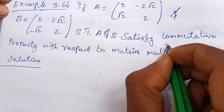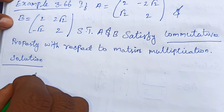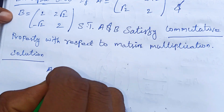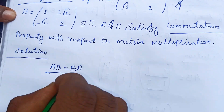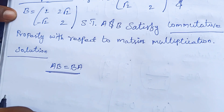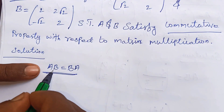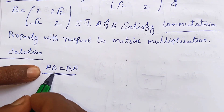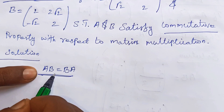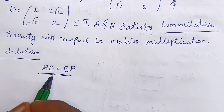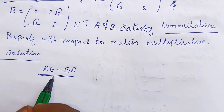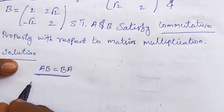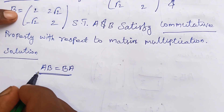What is the commutative property? The commutative property solution states that AB = BA. Both the left-hand side and right-hand side answers must be equal. If they are equal, this is commutative property of multiplication; otherwise it is not.